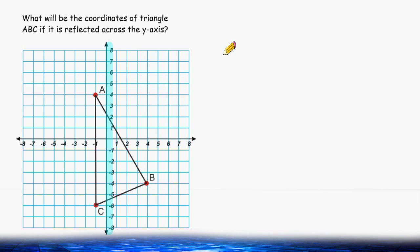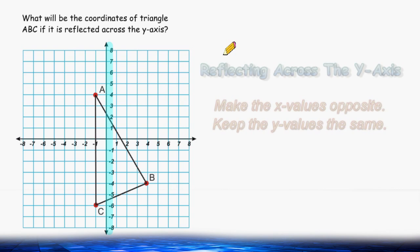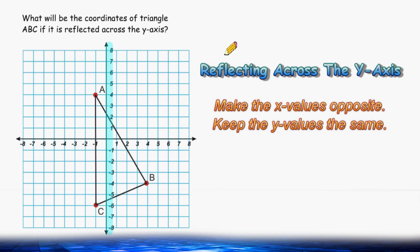Whenever reflecting anything over the y-axis, what you do is you take the original points and you make sure that the x values will become opposite and you make sure that the y values will remain exactly the same.